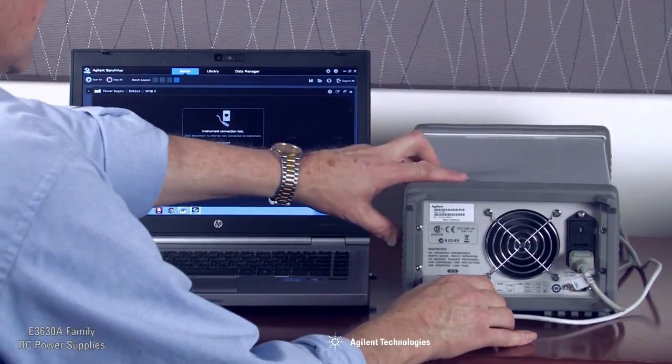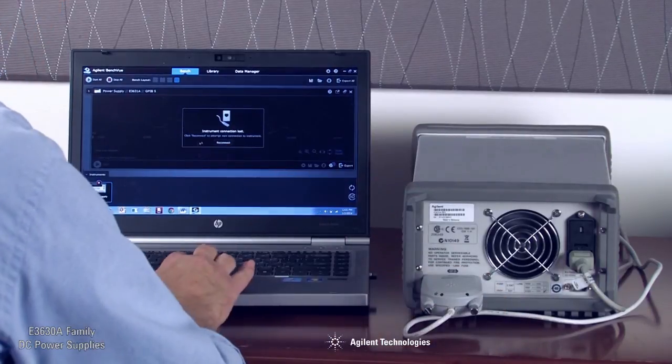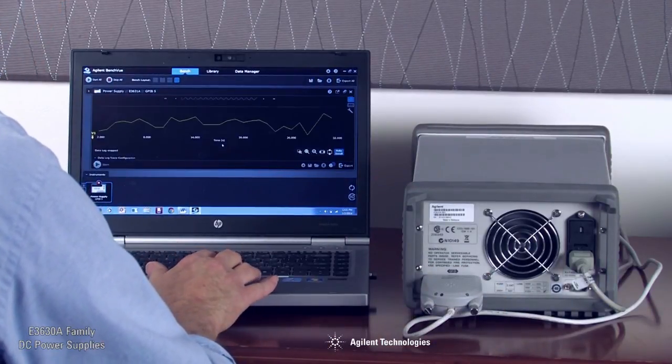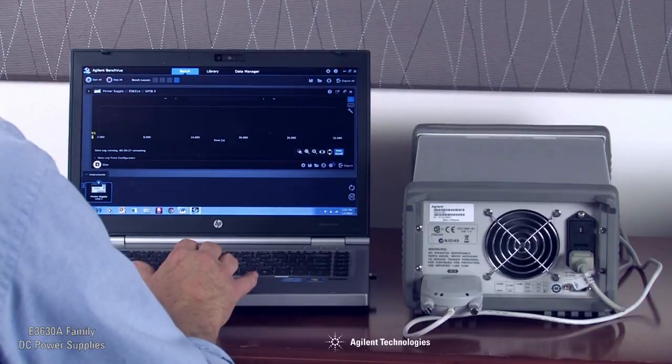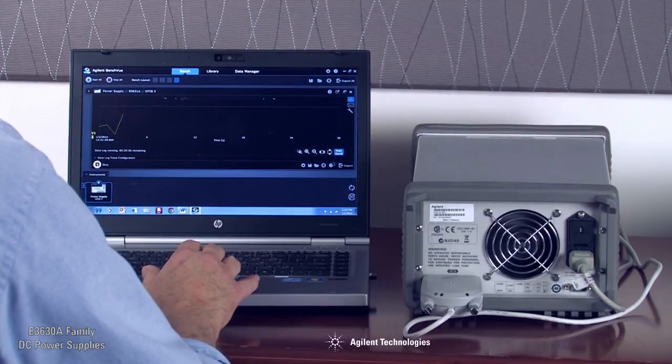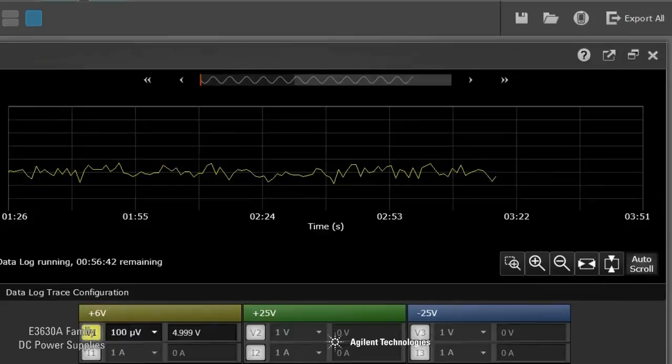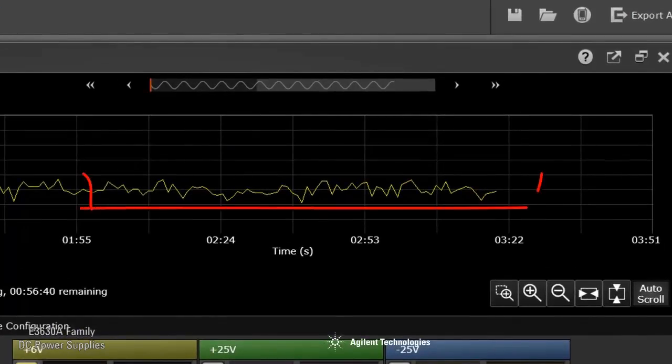Here we are using an Agilent 82357B USB to GPIB converter to connect to the PC, and using the free Agilent BenchView software, we can monitor the output of the 30 volt supply. Note that the output noise is less than 150 microvolts RMS, well below the spec of 350 microvolts RMS.